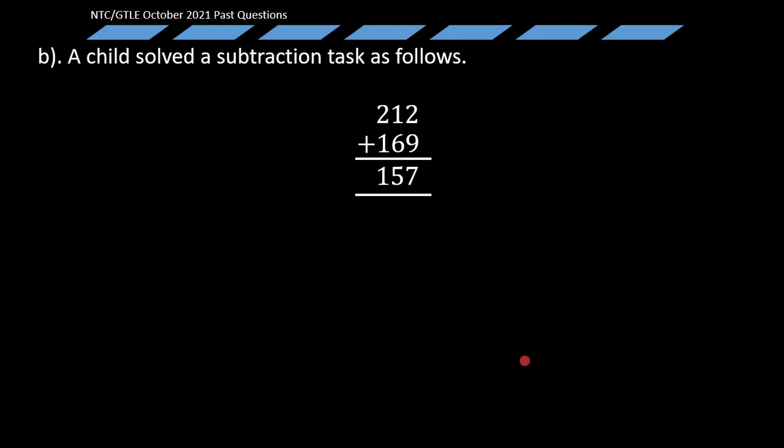Let's come to the second question. A child solved the subtraction task as follows: 212 plus 169 gives the answer 157. Look at the child's solution critically and guess what the child did wrong. Now let's focus on the question: what did the child do wrong?